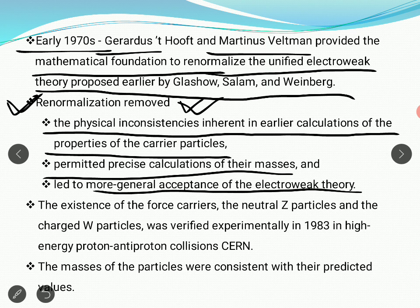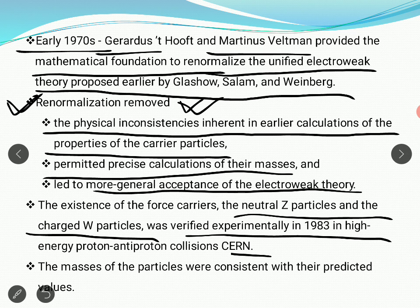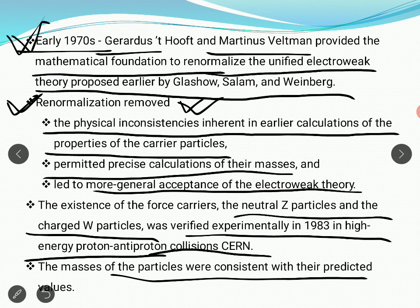The existence of the force carriers — the neutral Z particles and the charged W particles, so two neutral particles meaning the Z particle and the photon, and the charged W particles — was experimentally verified in 1983 at CERN. They conducted a proton-antiproton collision, as we talked about in the first unit, and it was experimentally verified in 1983. The masses of these particles were very much consistent with the predictions made in the mathematical formulation in the 1970s, so this theory became more or less globally acceptable.